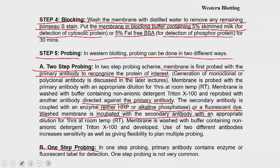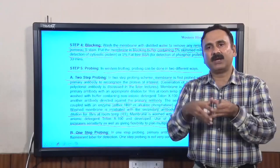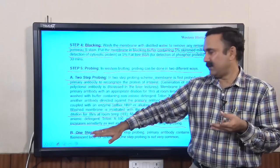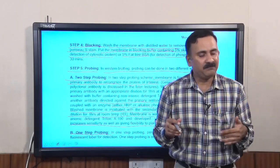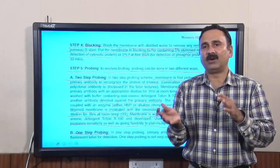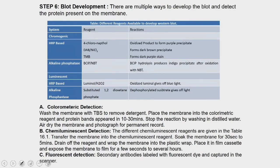The secondary antibody, typically HRP- or alkaline phosphatase-conjugated or labeled with a fluorescent dye, amplifies the signal several fold. The washed membrane is incubated with secondary antibody at appropriate dilution for one hour at room temperature, then washed with buffer containing non-ionic detergent. Using two antibodies increases sensitivity and flexibility — for example, you can probe multiple membranes with different primary antibodies. Single-step probing using a directly labeled primary antibody is less common due to lower sensitivity and flexibility.